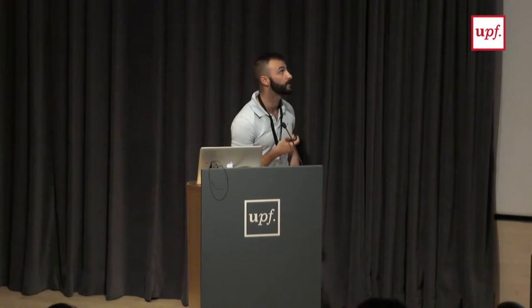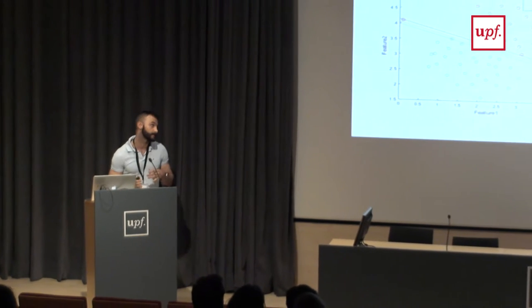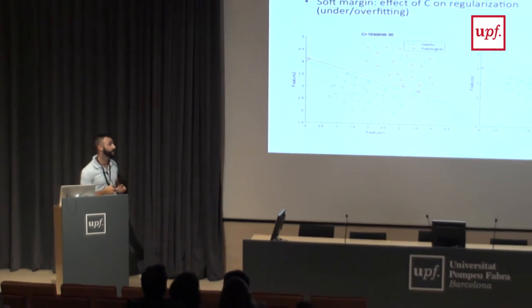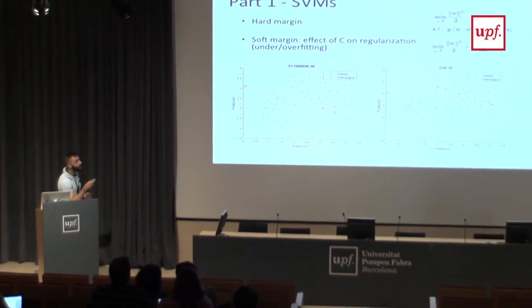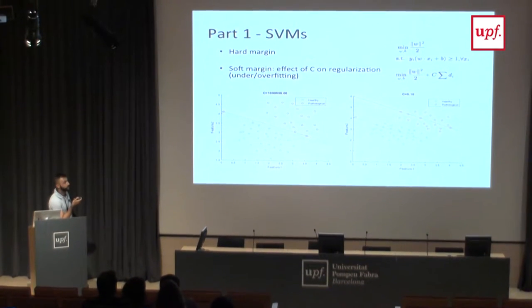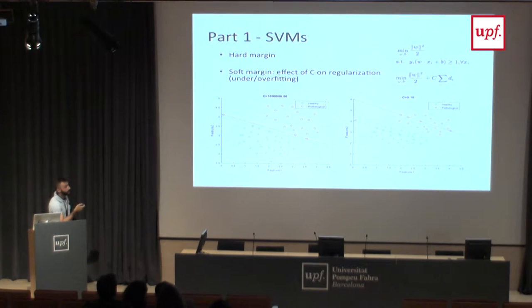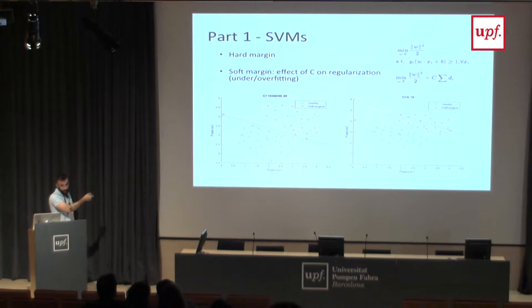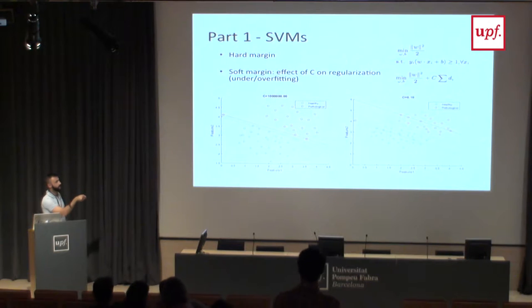The first part of the activity was using support vector machines, which are used to differentiating and categorizing data. This is a very intuitive example in 2D. The problem is to use the minimization of the distance of the hyperplane, which in 2D is a line, to categorize and distinguish the data.